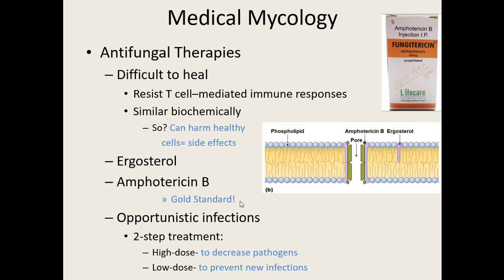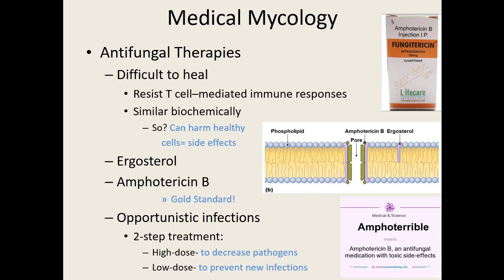For opportunistic infections in immunocompromised patients, treatment is usually two steps: a high-dose antifungal to decrease the number of fungi in the body, followed by a low dose for a long period of time to prevent new infections. High doses of antifungal can lead to harmful side effects, hence the two-step approach. Amphotericin B is sometimes nicknamed 'Ampho-terrible' because of its toxic side effects.